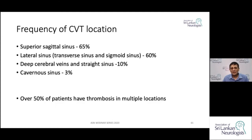When you add up the percentages, you get more than 100%, because very often you have multiple locations involved in the thrombosis. Over 50% of patients may have involvement of more than one sinus at the same time — for example, superior sagittal sinus with transverse sinus thrombosis.